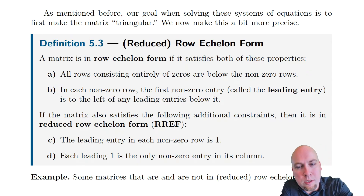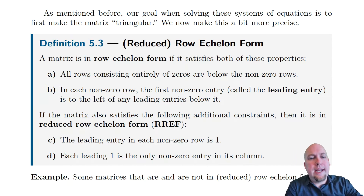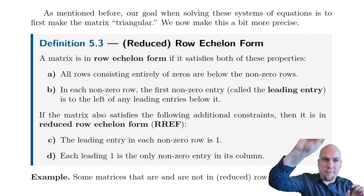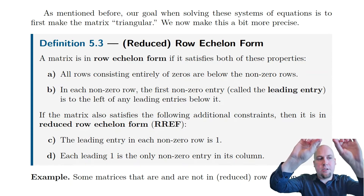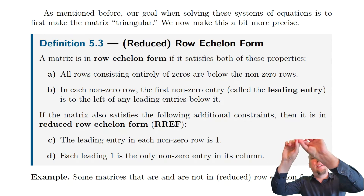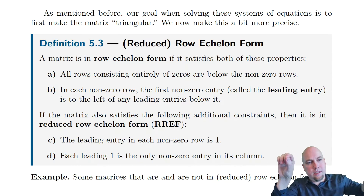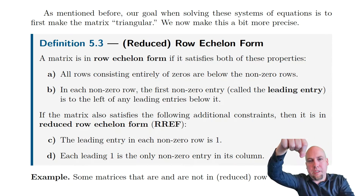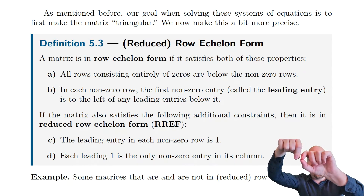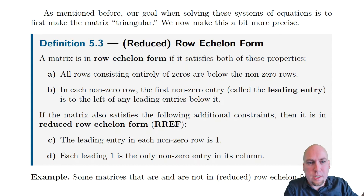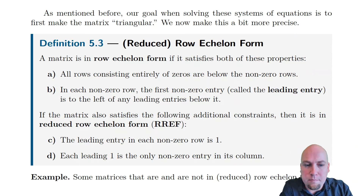The next thing — this is the key property — is that in any non-zero row there is a first non-zero entry, which we call the leading entry of that row. The leading entries must form a stair-step pattern going down and to the right. If you have a leading entry, there are no leading entries directly below it or to the left of it. The only other leading entries are below and to the right. That's what gives the matrix its upper triangular form.